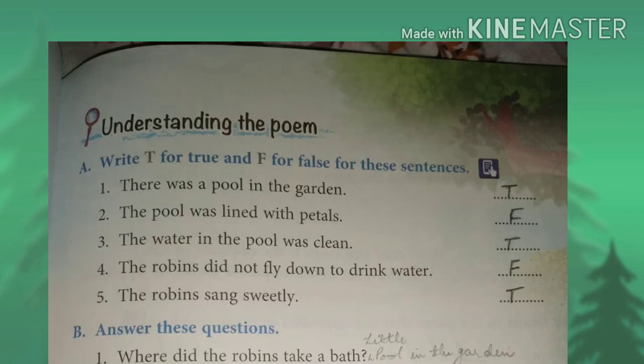The first exercise is A. Write T for true and F for false for these sentences. Number 1: There was a pool in the garden. The answer is true. Number 2: The pool was lined with petals. The answer is false — it was lined with pebbles.